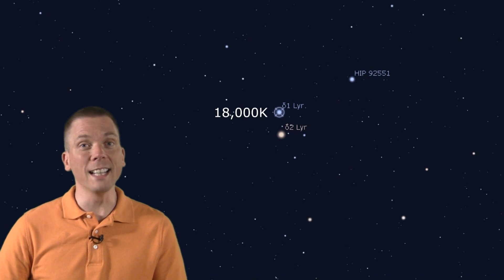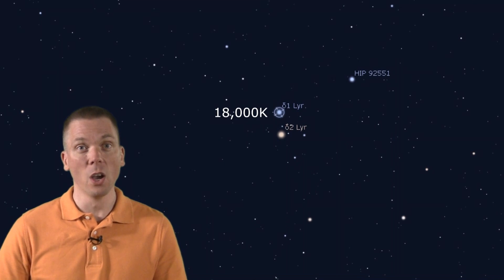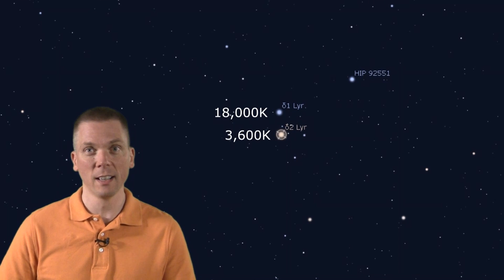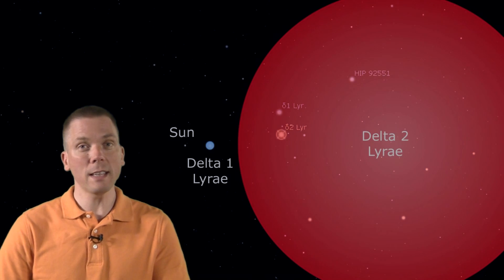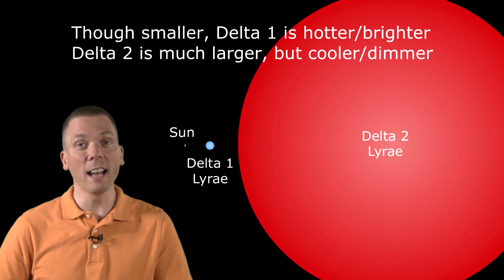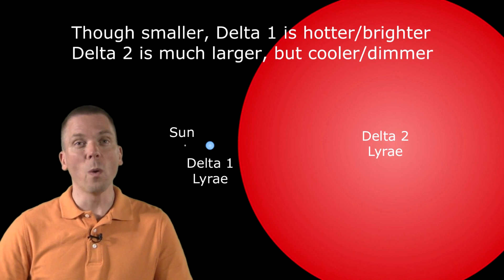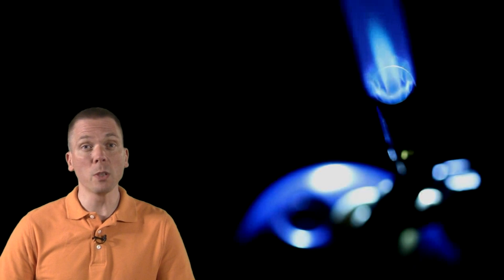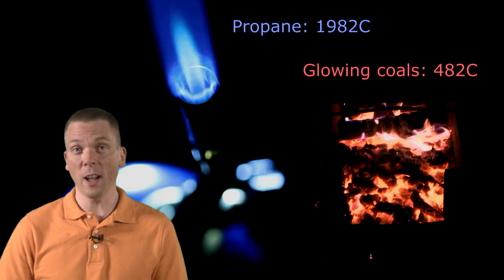In addition to the striking visual contrast, there is a significant temperature difference. Blue Delta 1 is 18,000 Kelvin, while red Delta 2 is 5 times cooler at a mere 3,600 Kelvin. The magnitude difference also makes sense, given that Delta 1 is 200 light years further from Earth at 1100 light years distance, while Delta 2 is 900 light years away. The color difference between them is like comparing a propane torch and the glowing coals of a fire. But there's more.